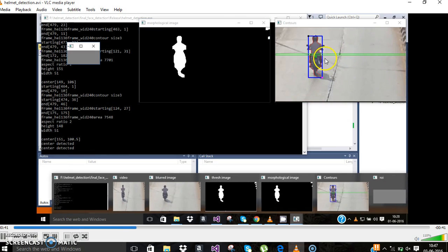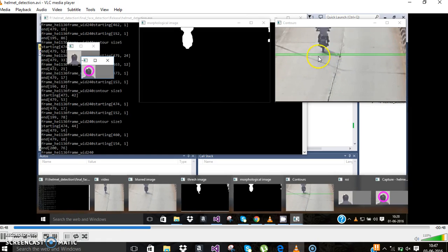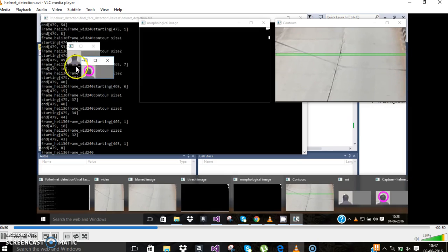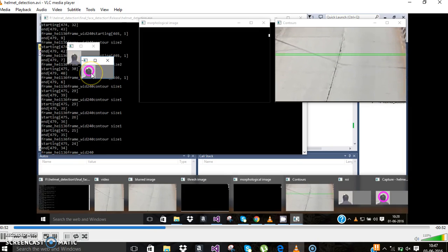Here, the motorcycle has been captured but not the car, because the center line is in between. Here the helmet is detected on the ROI.